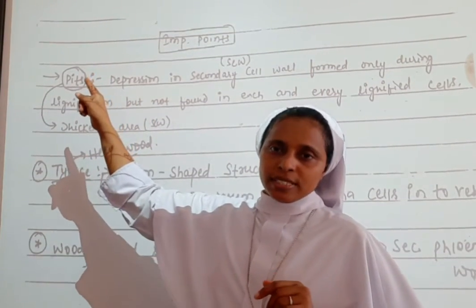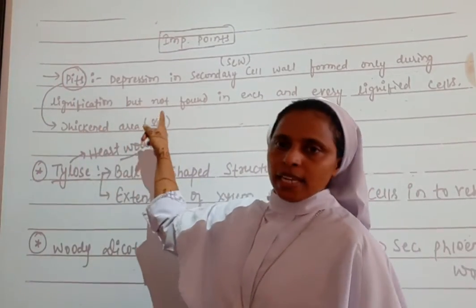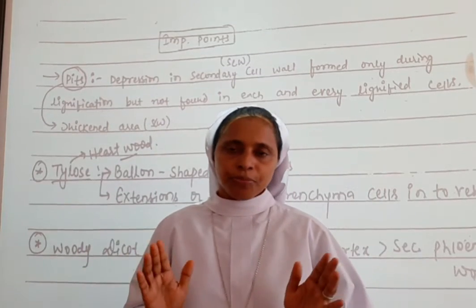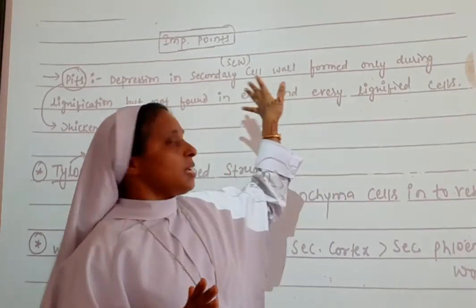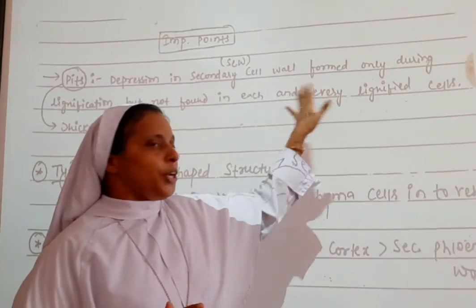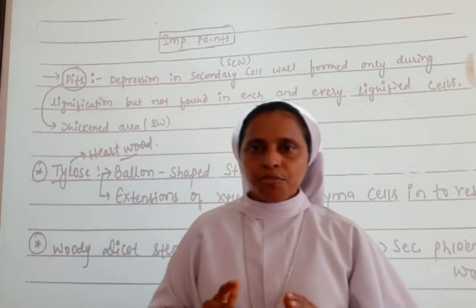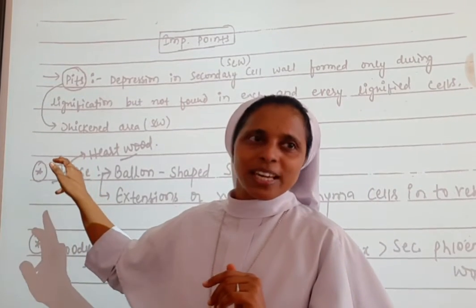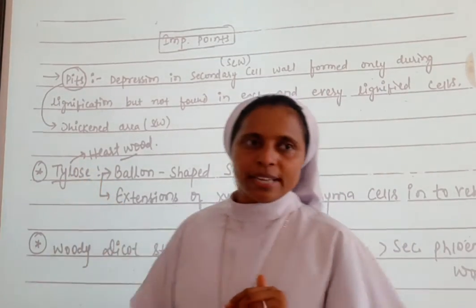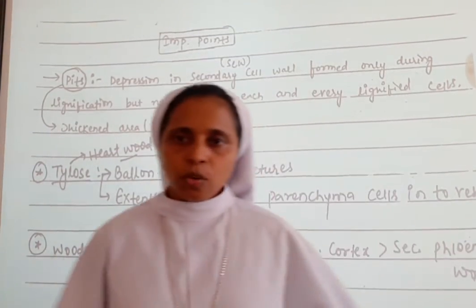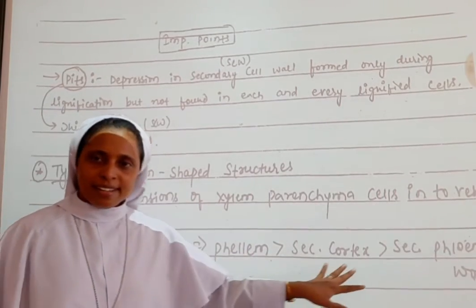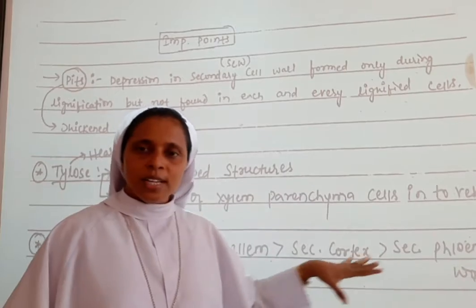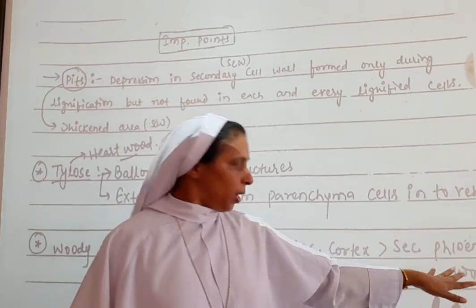The last important points to remember are pits and tyloses. Pits are the thin areas — depressions in the secondary cell wall formed only during lignification — but not found in each and every lignified cell. Tyloses are found in heartwood; they are an extension of xylem parenchyma, a root-like structure. Regarding the order from periphery to center: phellem, secondary cortex, secondary phloem.